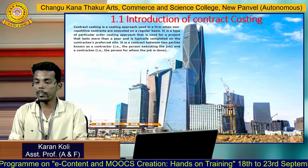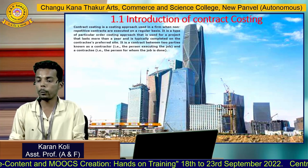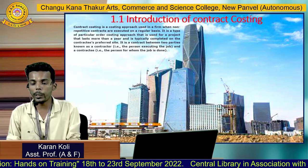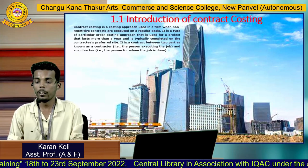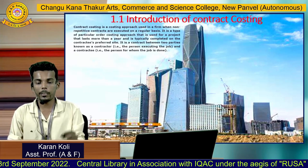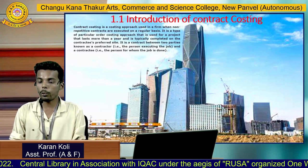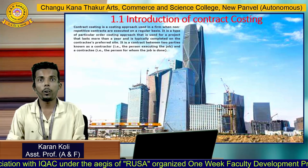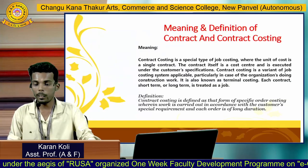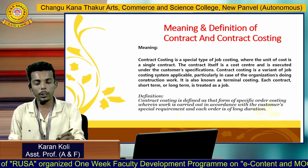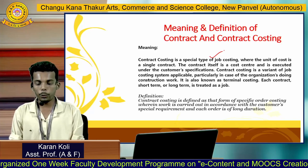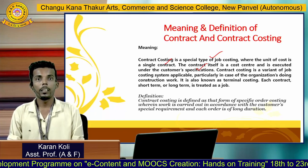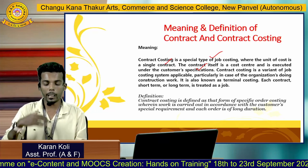Contract costing is the approach used in a firm when non-repetitive contracts are executed on a regular basis. It is a type of particular order costing used for projects lasting more than one year. Contract costing is a special type of job costing where the unit of cost is a single contract. The contract itself is the cost center and is executed according to customer specification and customer order.